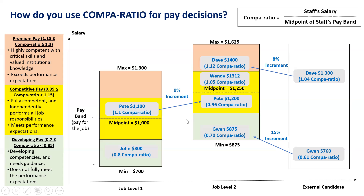Second example — let's look at Dave. Dave is an external candidate that I want to hire at job level two. I will look at internal equity when deciding on his pay. What salary to offer Dave depends on his skill and experience relative to my other staff. If I have assessed that Dave's skill and experience is slightly higher than Wendy's, I will offer him a salary slightly higher than Wendy's salary of $1,312.